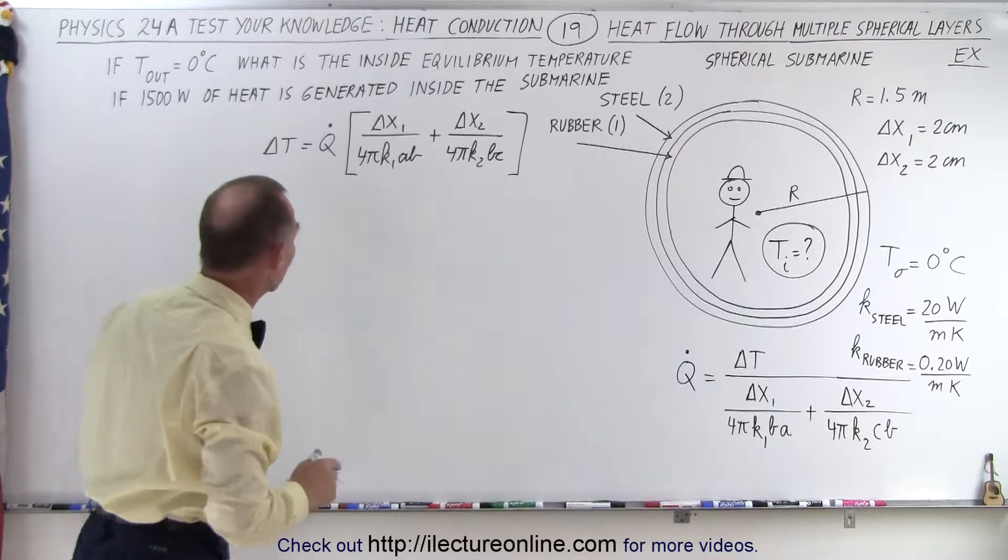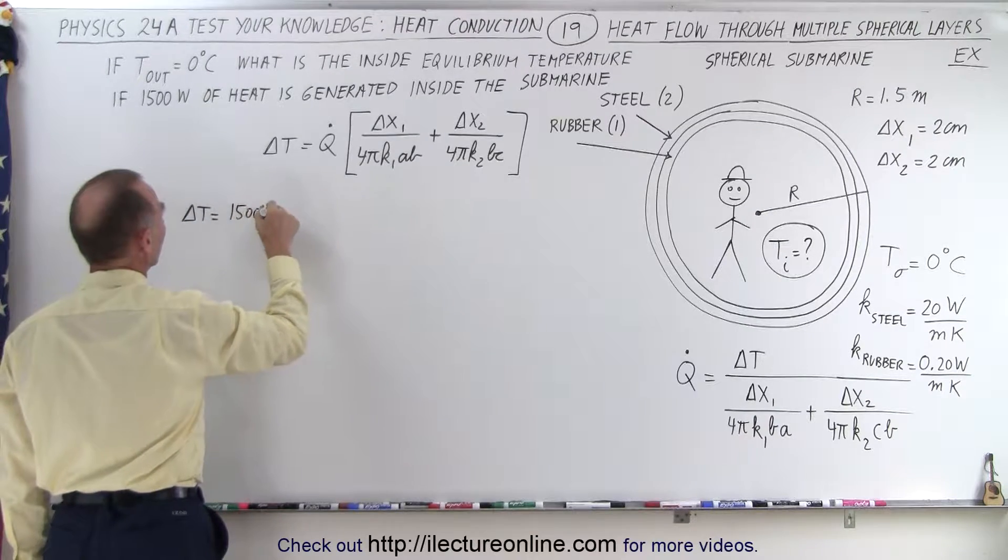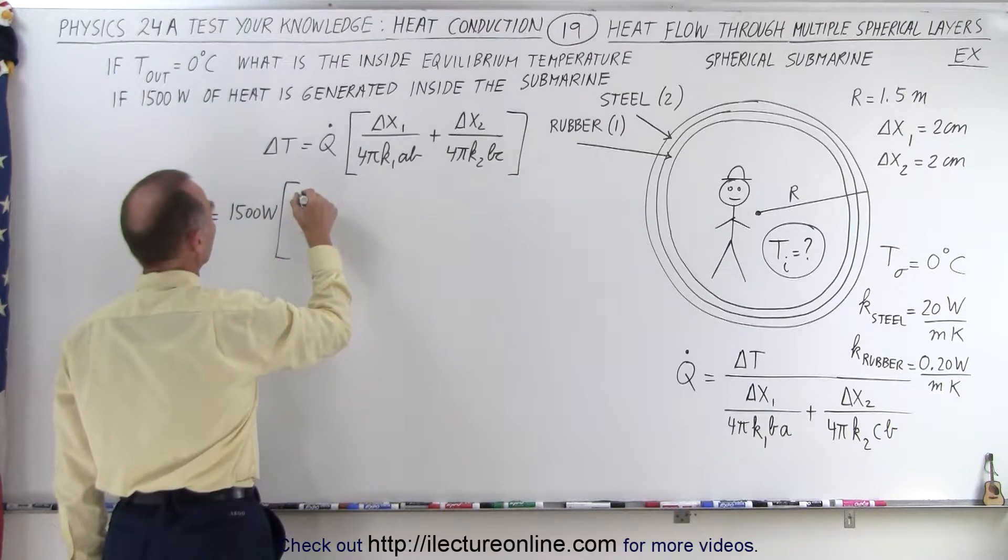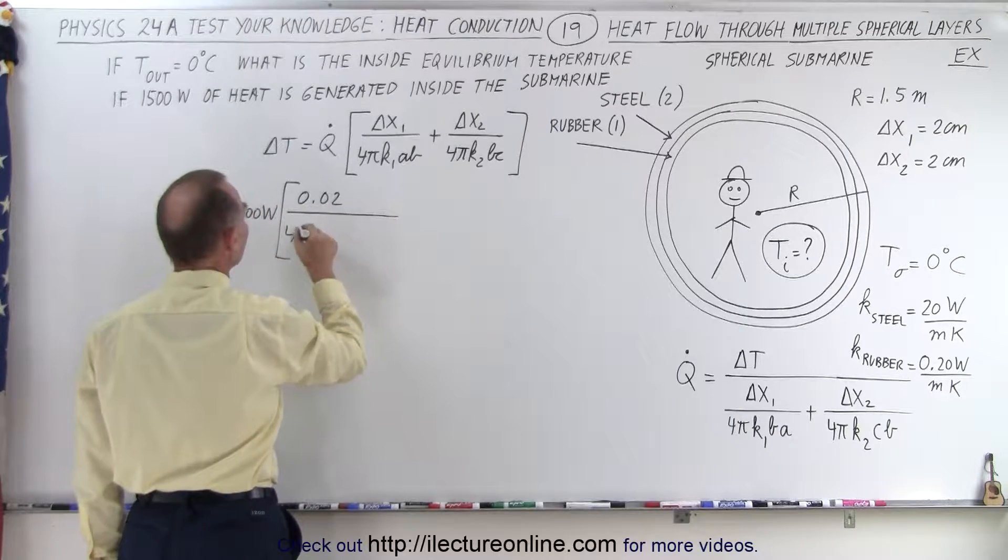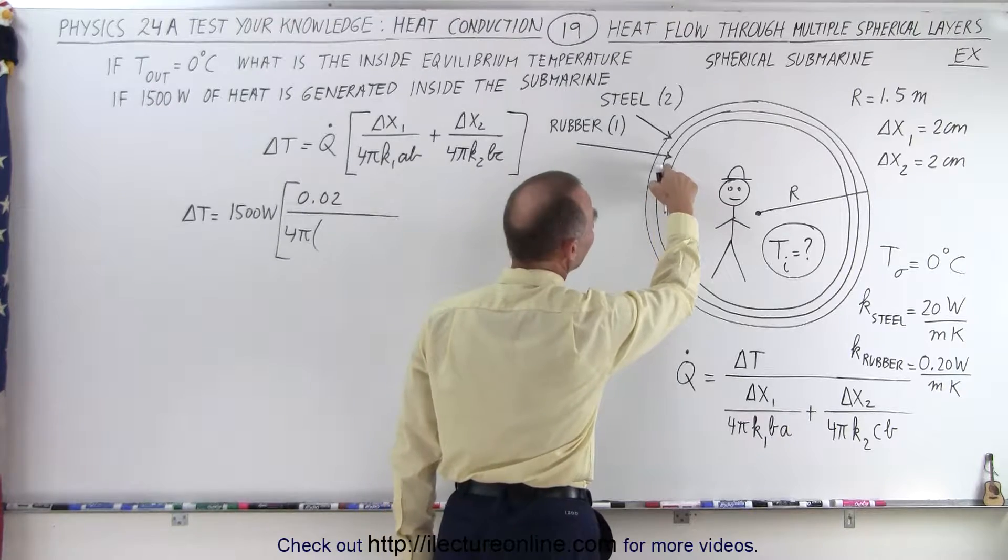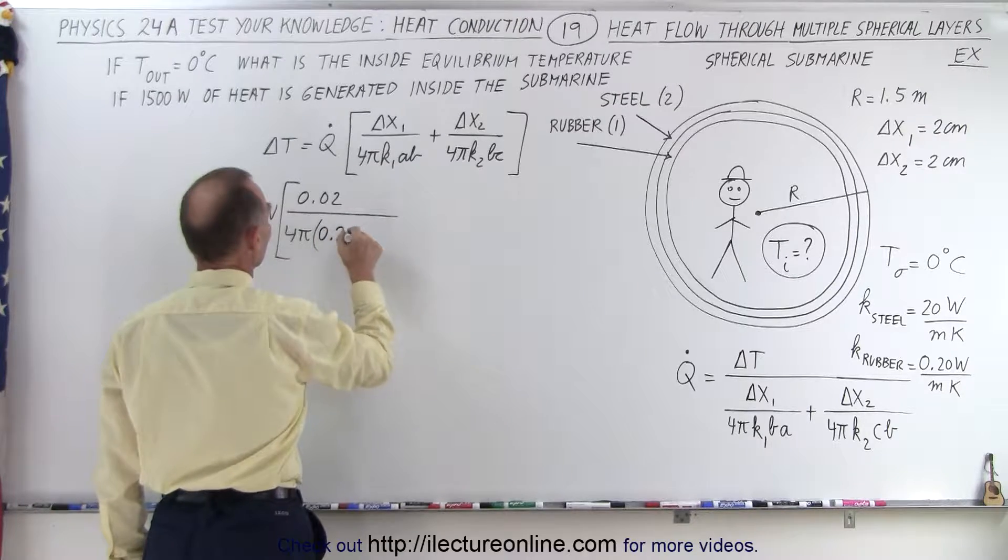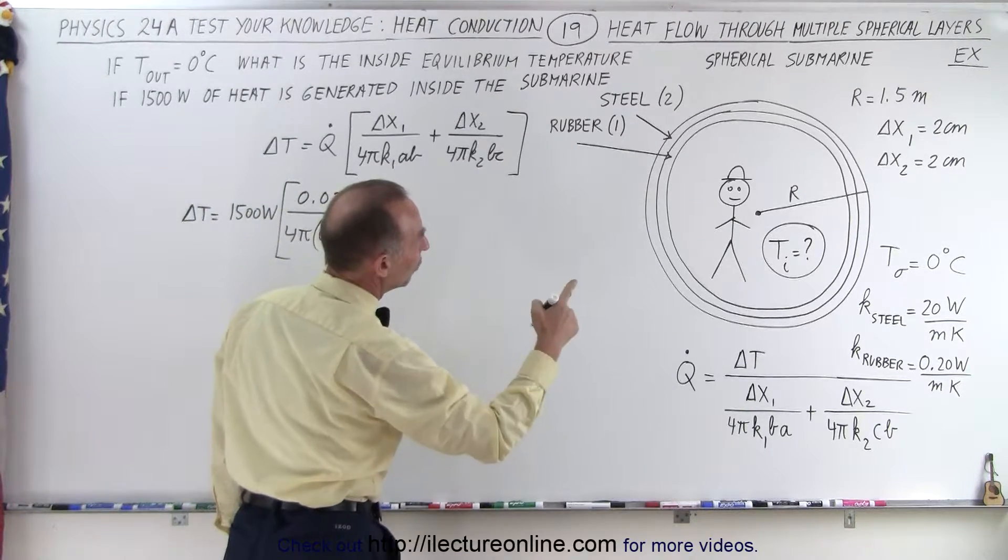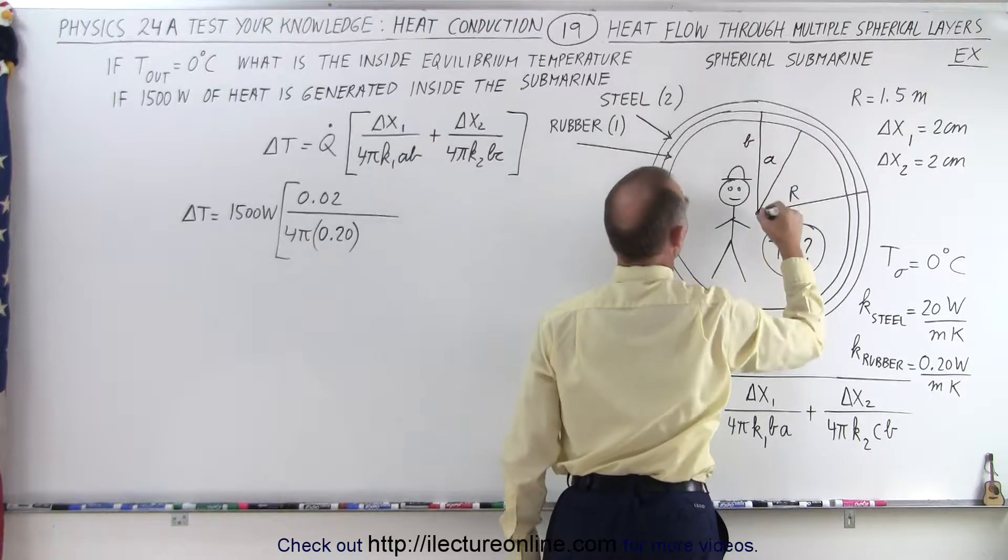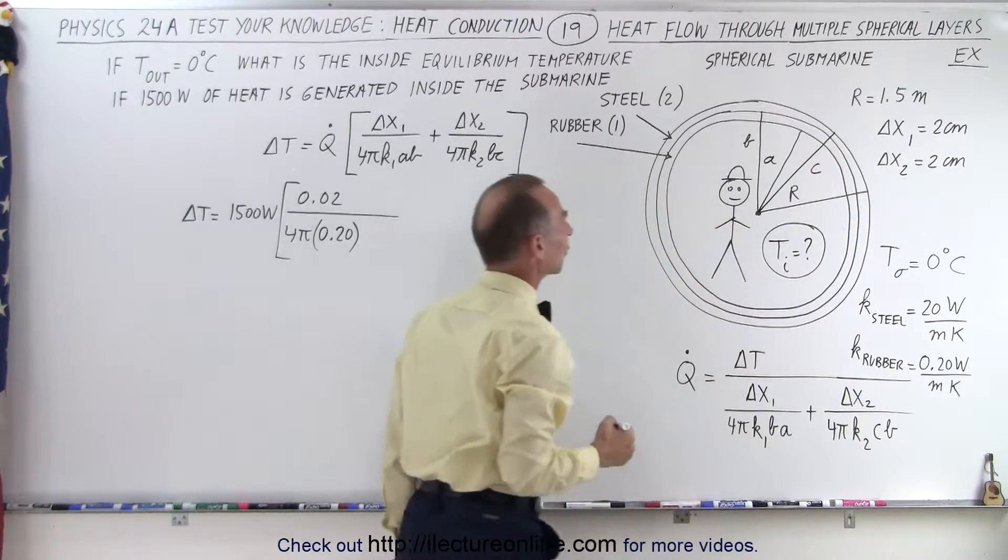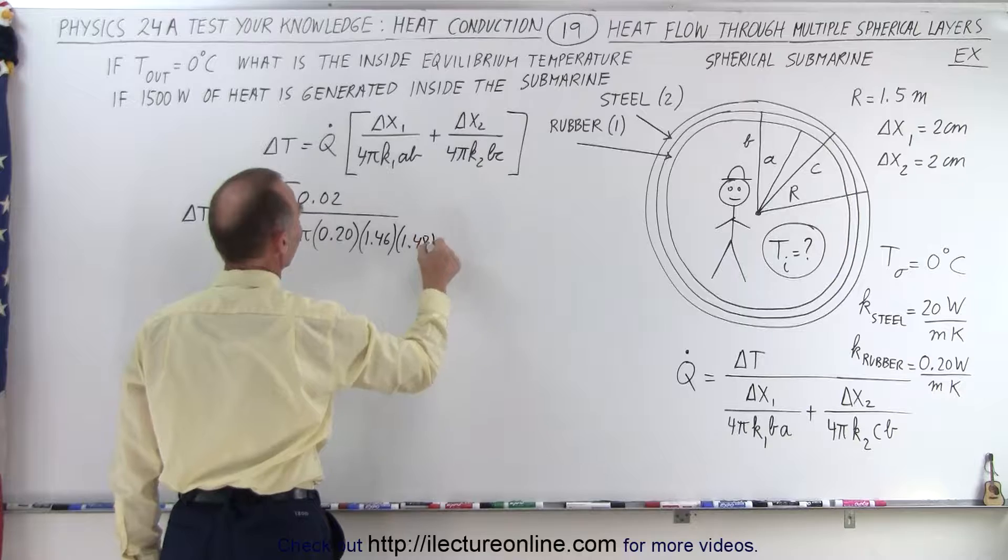Now we have to be careful to plug in the correct values. So what is the difference in the temperature? Well, first of all we have 1500 watts, multiplied times delta X1, it's 2 centimeters, which is 0.02 meters. I'm going to leave off the units to make a little bit cleaner. 4 pi times K1. Now K1 is the inside layer, and the K1 inside layer is 0.20, times the distance to the inside, that would be A, so notice that this here would be A, this here would be B, and this one would be C. So from A to B, that would be 1.46, in terms of meters, times 1.48, like this.